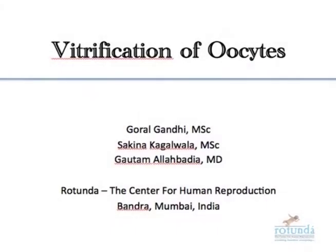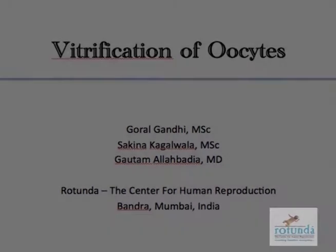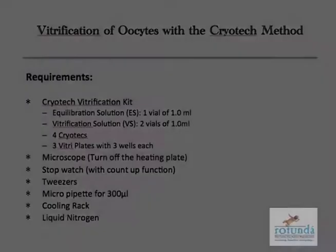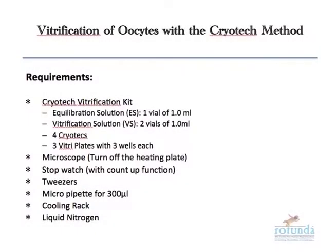Vitrification of oocytes using the Cryotech method. Before beginning the process, ensure that the microscope stage heating is turned off and the room temperature is around 25 to 27 degrees centigrade.